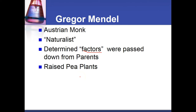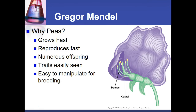Before we understand the genetics of pea plants, it's important to know a little about plant anatomy. Why peas? They grow fast, they reproduce fast, they have numerous offspring, and their traits are easily seen. It doesn't take a genius to look at a flower and determine if it's purple or white, or if a plant is tall or short, or if a pod is wrinkled or smooth. This allowed someone like Mendel, who didn't have a very strong biological background, an easier time determining what these traits are. And they're easy to manipulate for breeding.